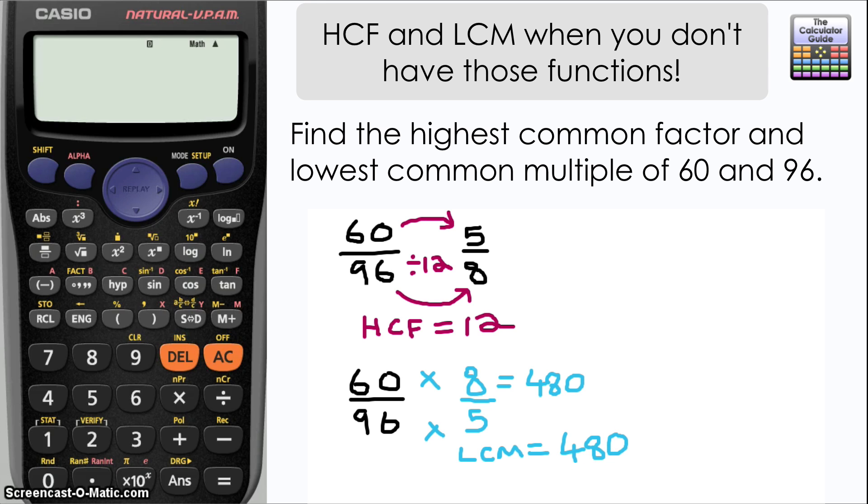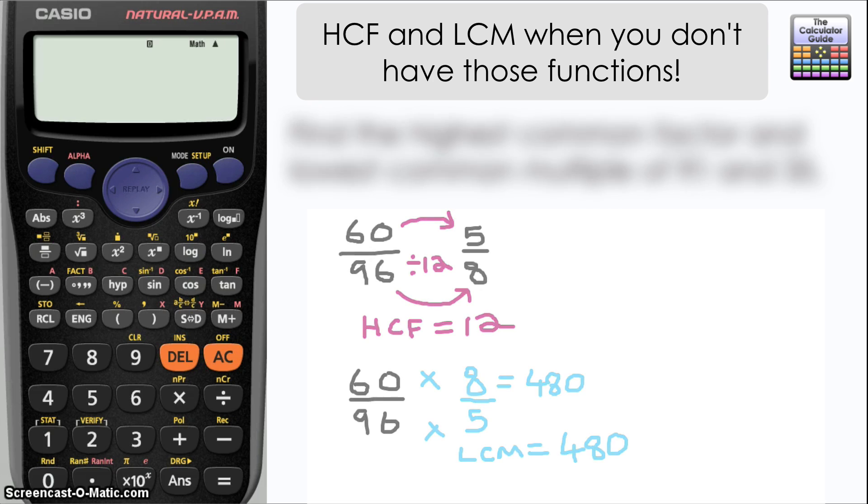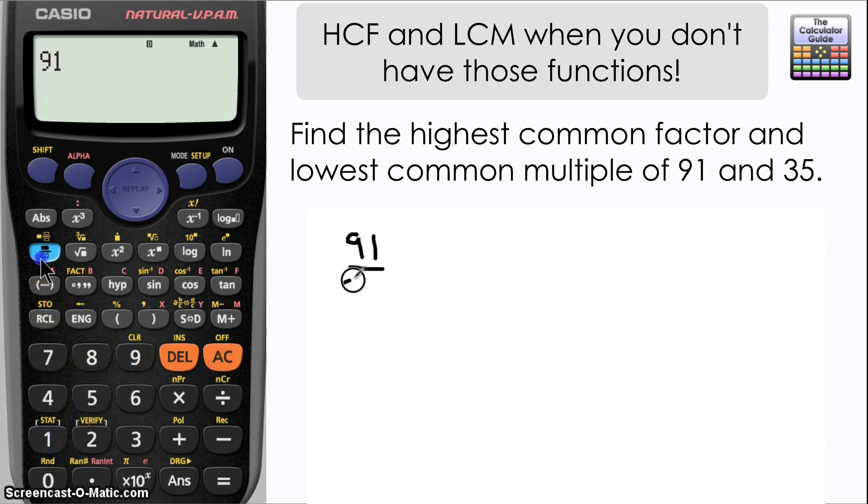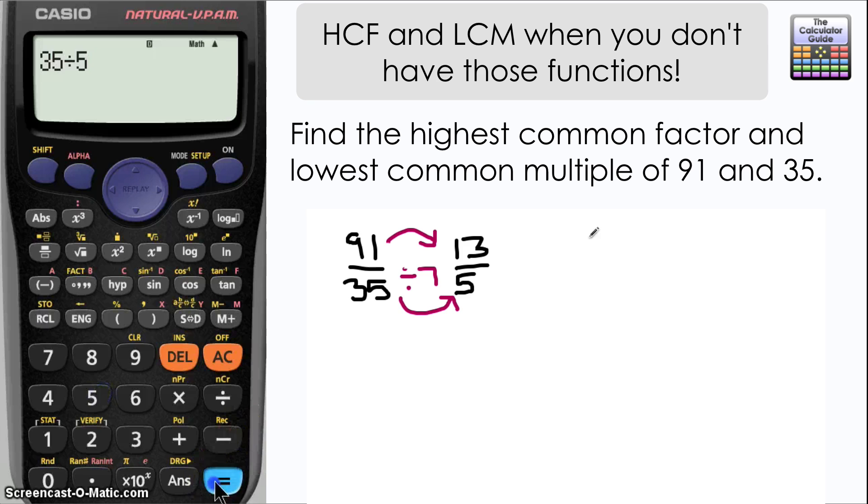Let's try that again, this time with 91 and 35. So make a fraction. This time I've got the larger number on the top but it shouldn't matter provided that my comparison fraction is also top heavy and I keep the top and bottom the same. Comparing the two fractions, we can see that the highest common factor between them is 7.